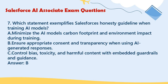Question 7: Which statement exemplifies Salesforce's honesty guideline when training AI models? A. Minimize the AI model's carbon footprint and environmental impact during training. B. Ensure appropriate consent and transparency when using AI-generated responses. C. Control bias, toxicity, and harmful content with embedded guardrails and guidance. Answer: B.